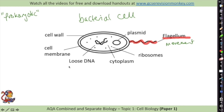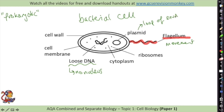One of the key things to show it's prokaryotic is it's got loose DNA - so it doesn't have a nucleus like the eukaryotic cells. They sometimes also have a plasmid or several plasmids, which is a loop of DNA - and that comes up in genetic engineering in paper 2 as well. It also has ribosomes to make proteins, cytoplasm where chemical reactions happen, a cell membrane, and a cell wall just like plant cells to strengthen it and give it more structure.